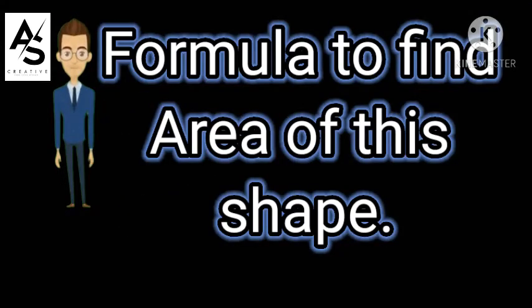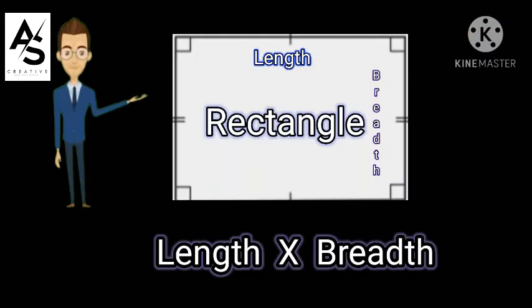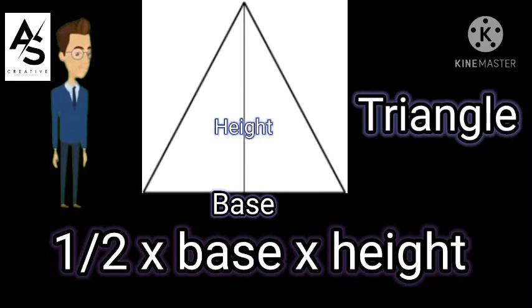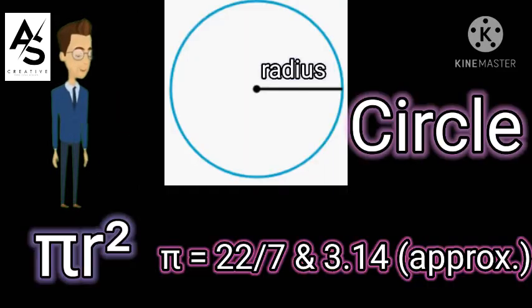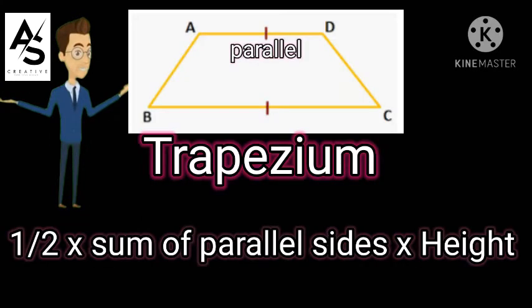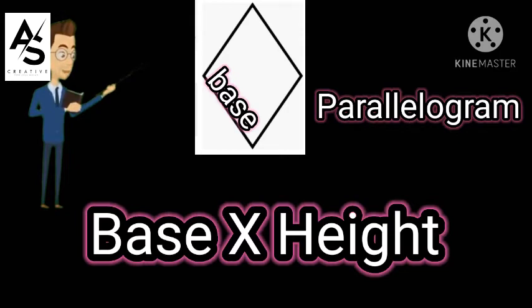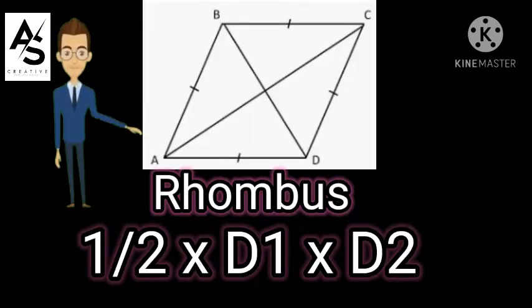Formulas to find area of these shapes: Rectangle — length × breadth. Square — side × side. Triangle — half × base × height. Circle — π r². Trapezium — half × sum of parallel sides × height.